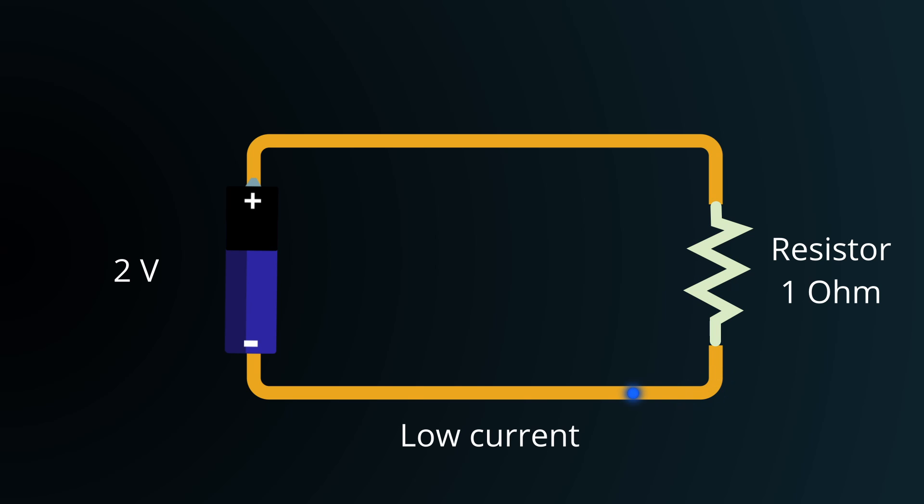The greater the resistance, the lower the current flow. On the other hand, the greater the voltage, the more push it gives to overcome these resistances, and the greater the current.